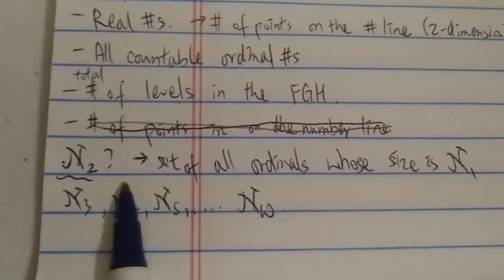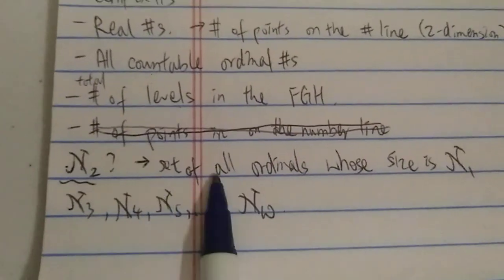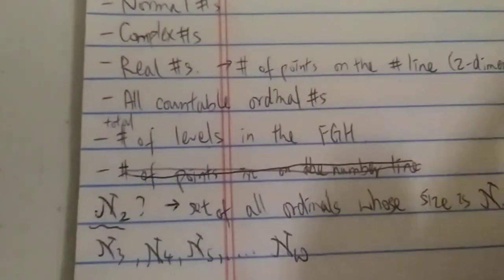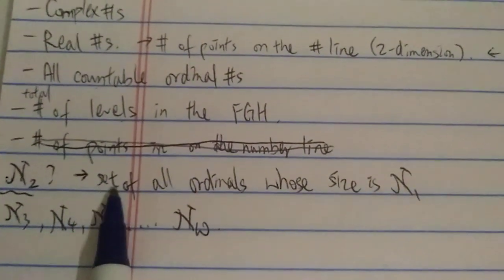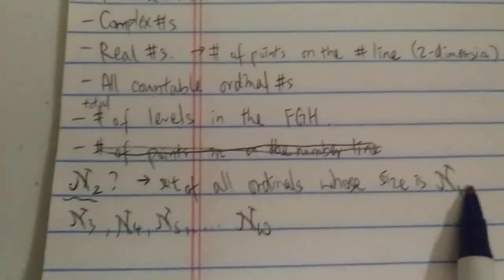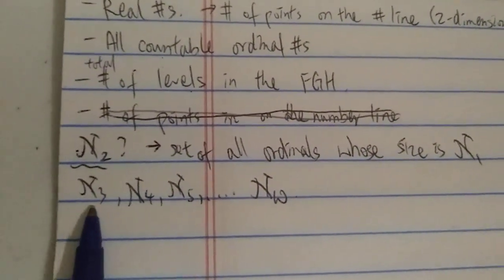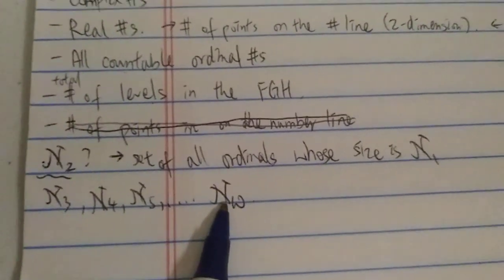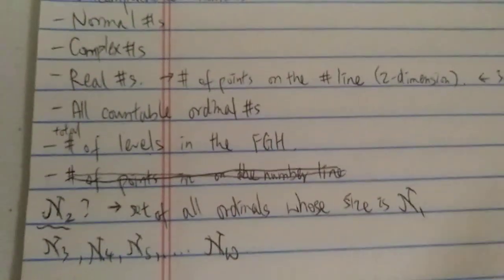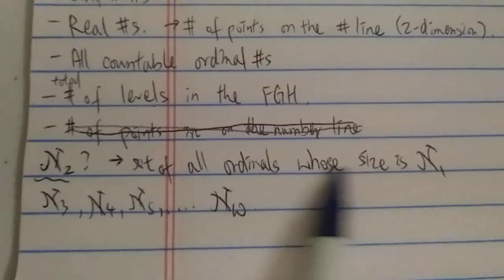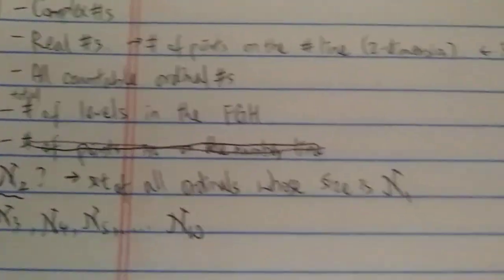Some people ask about examples of ℵ₂. Just like ℵ₁ is infinitely bigger than ℵ₀, ℵ₂ is infinitely bigger than ℵ₁. Some suggest the set of all ordinals of size ℵ₁ belongs here. However, ℵ₂ is not even close to the biggest cardinal — you can keep going: ℵ₃, ℵ₄, ℵ₅, all the way to ℵ_ω and beyond. It's not very clear what concrete sets belong to these groups, since it's related to the difficulty of the continuum hypothesis.